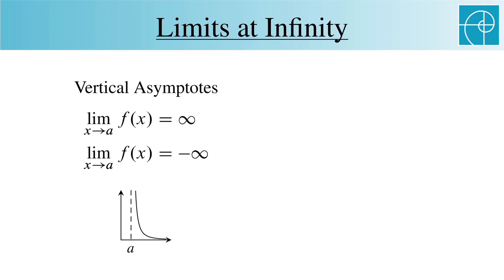Actually, I'm lying a bit here, since we really only need a one-sided limit equal to infinity to have a vertical asymptote.